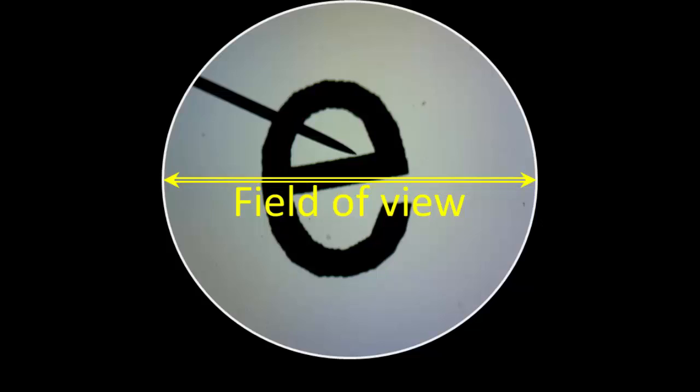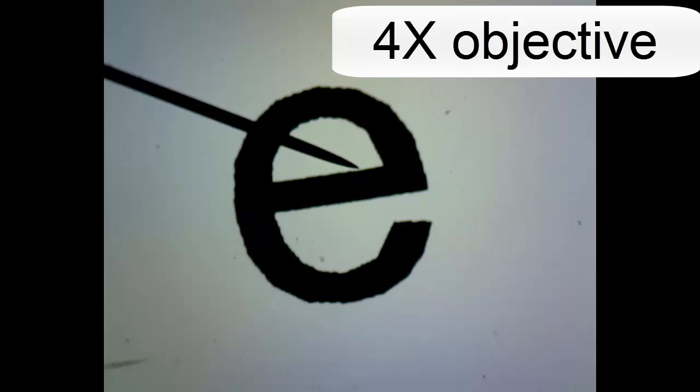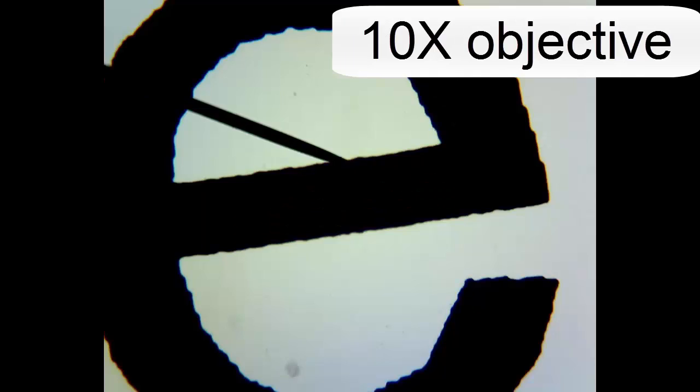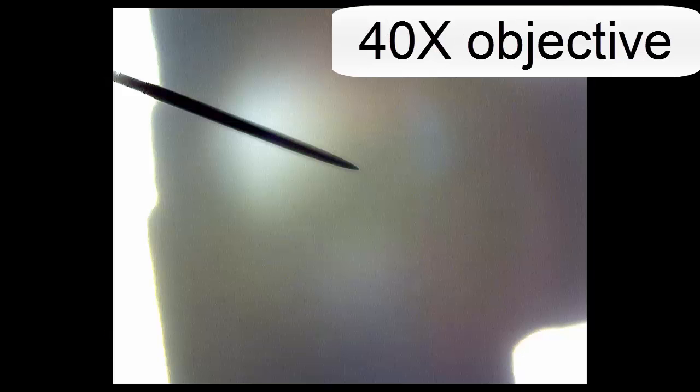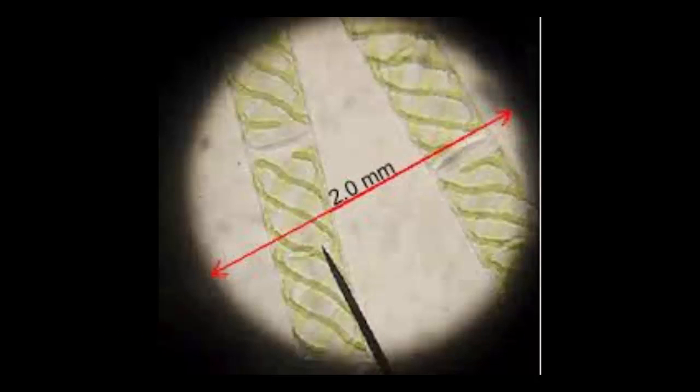Field of view: the span that you can see when you look through the microscope. The field of view will decrease as the magnification increases. Knowing the size of the field of view is useful when observing specimens because it will allow you to estimate the actual size of the object being viewed.